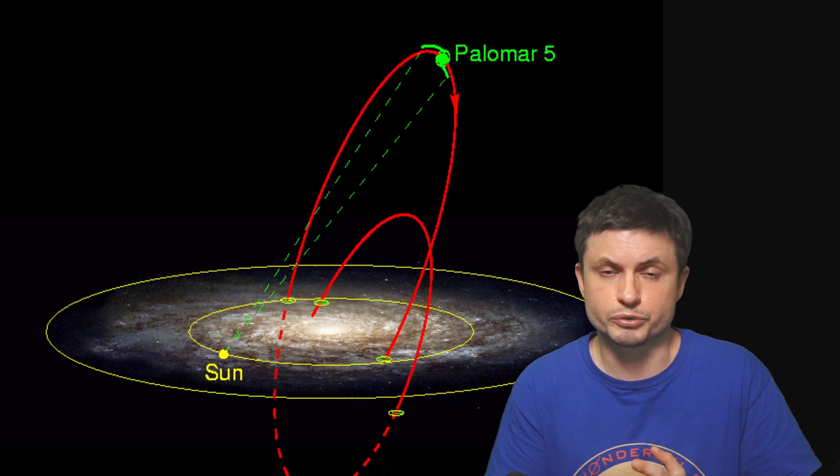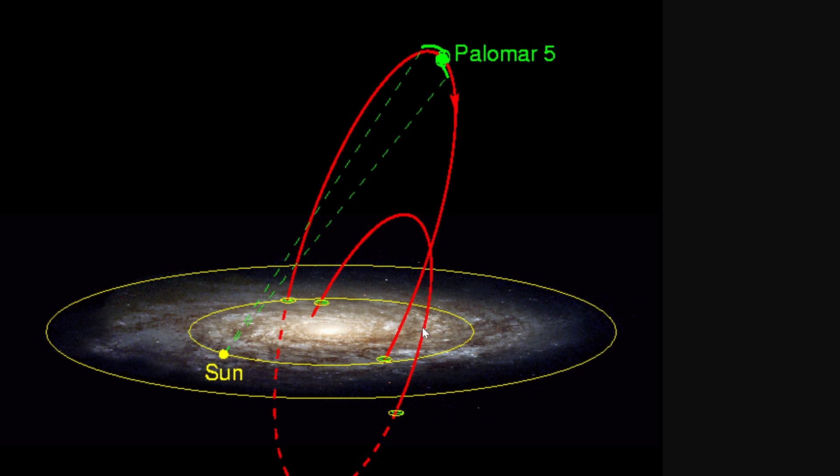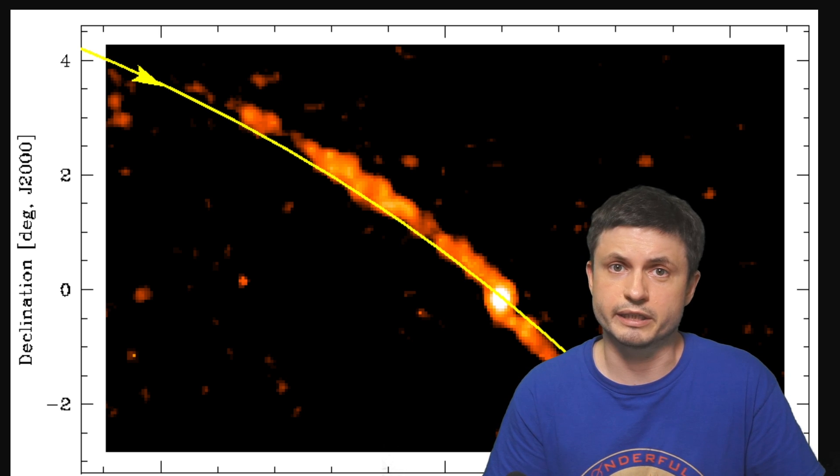So in other words, something might have actually changed its orbit, causing it now to fall through the Milky Way galaxy and thus becoming tidally disrupted. But unlike other clusters and unlike other tidal streams,